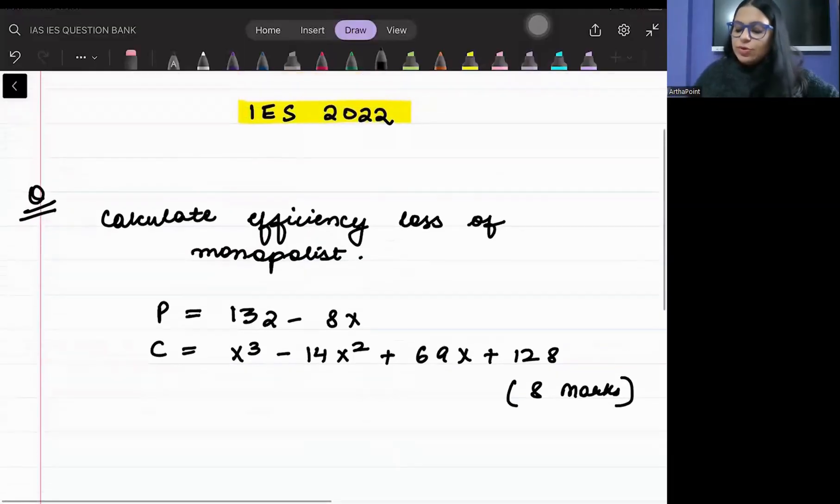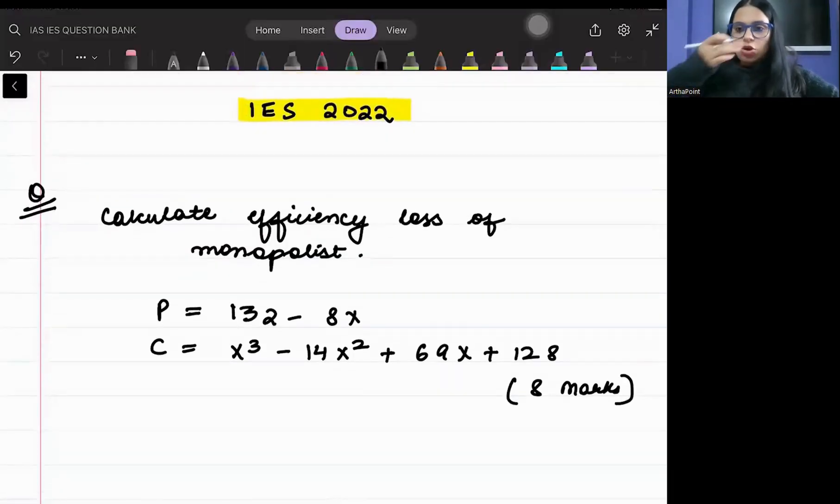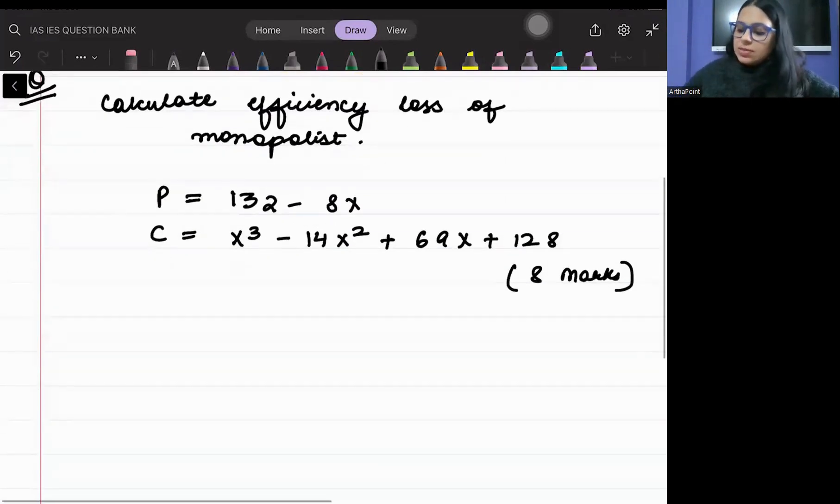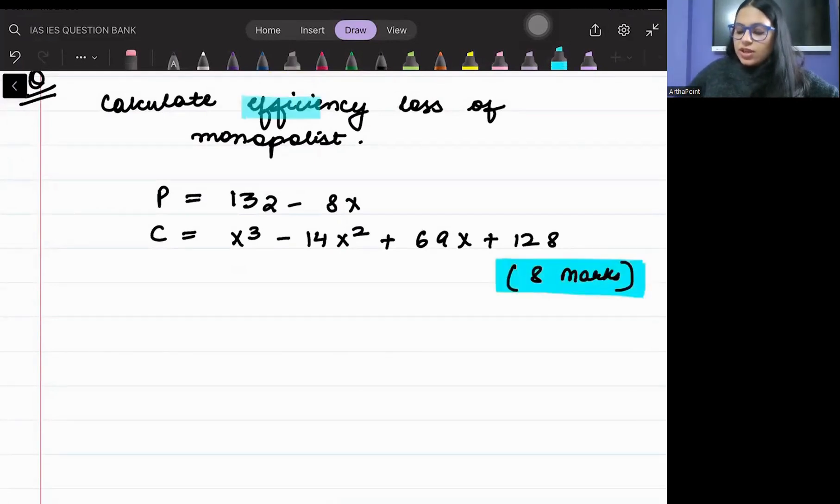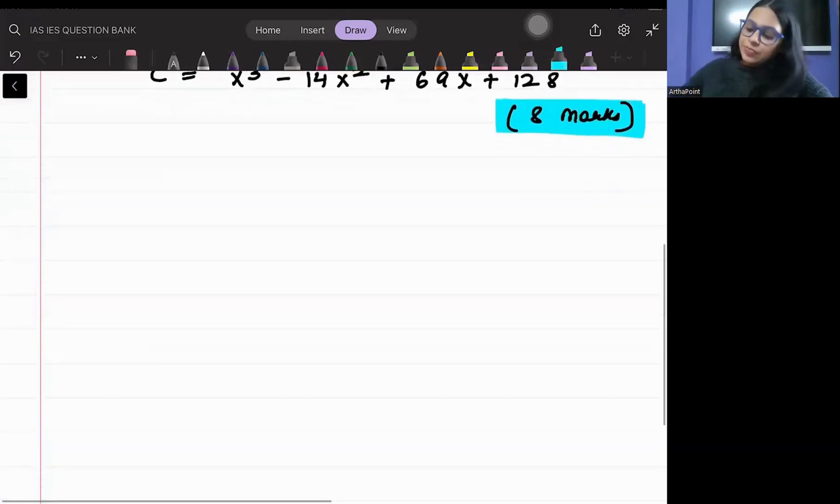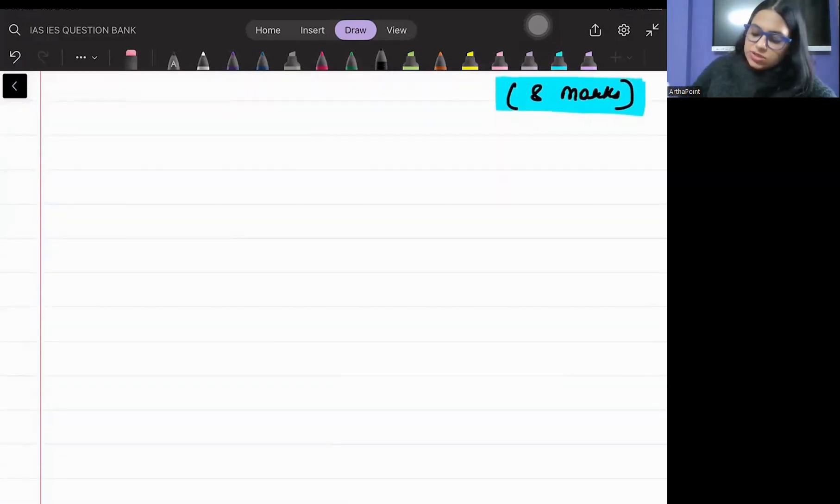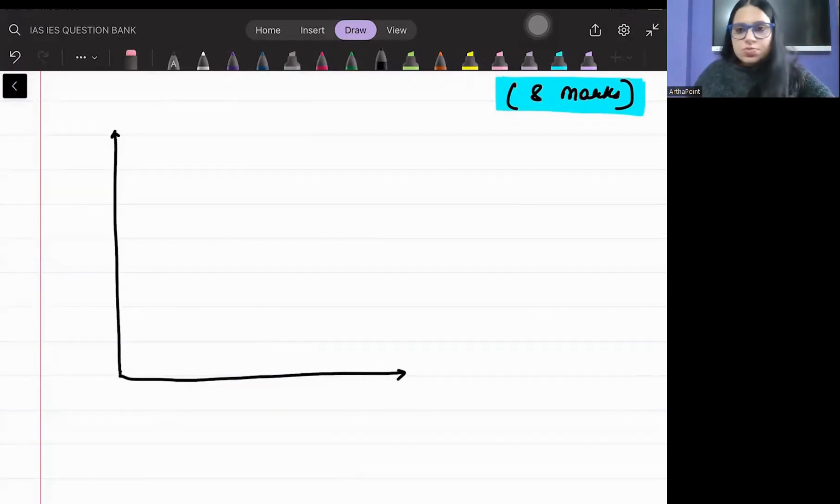Hello beta, welcome. Today I'm going to take another question from Indian Economic Service 2022 paper, and beta this came as an eight marker in the exam in which you have to calculate efficiency loss of a monopolist. Efficiency loss kaise nikaalte hai, let us try to see that. So what we are going to do is the following - efficiency loss means deadweight loss.